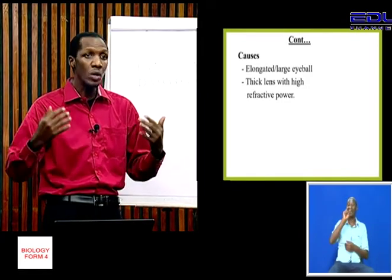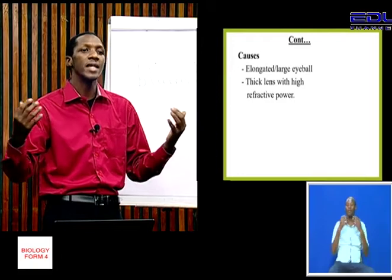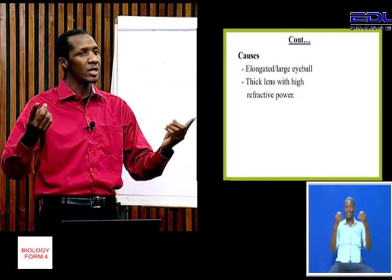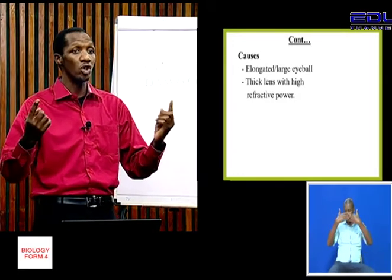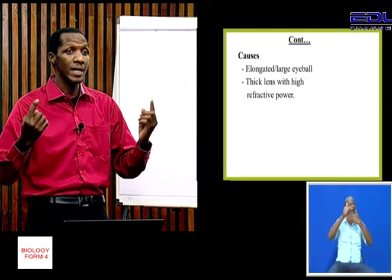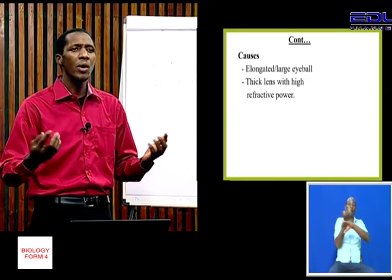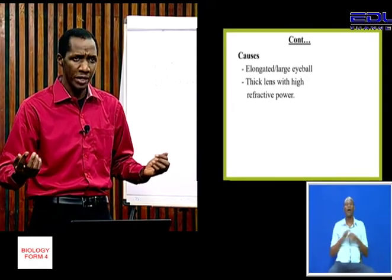Individuals with myopia can see clearly objects that are near the eye, but distant objects cannot be focused clearly. How is this corrected?